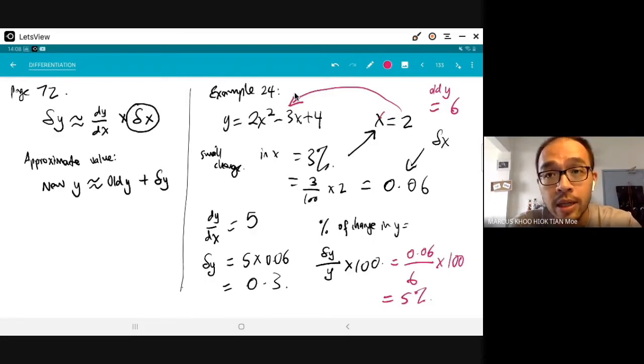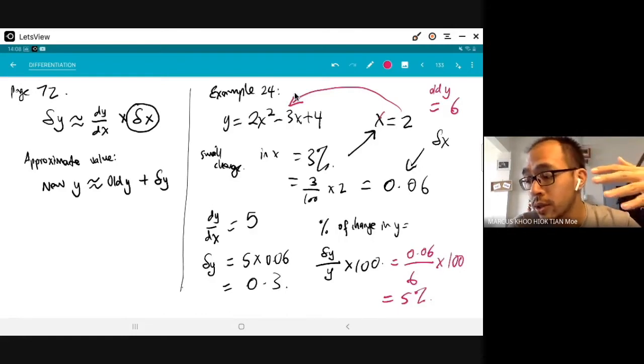How we will find the percentage is obviously the del y over the original y times 100. So percentage of change in y equals to del y over y times 100. So you have to find the old y, and how we find the old y is the same thing that we did yesterday, we substitute the old x into this one. So you find that the old y, if you follow the calculation there, the old y is actually equals to 6. When we substitute 2 into this equation, we get y equal to 6. So the del y will be 0.06 over the old y, which is 6 times 100, so you will get 5%.